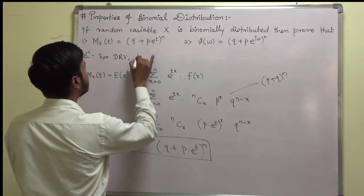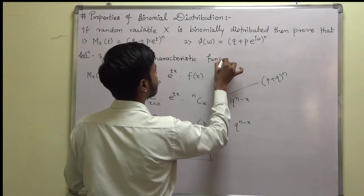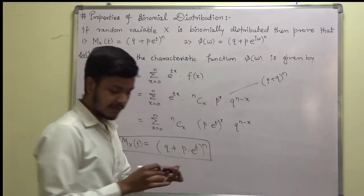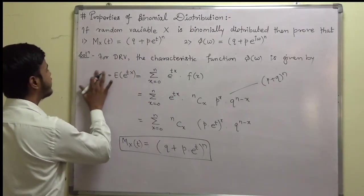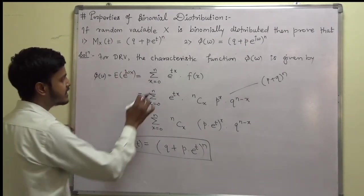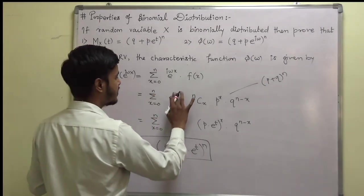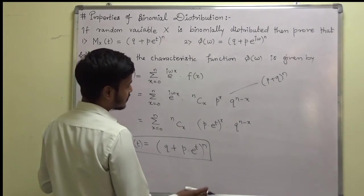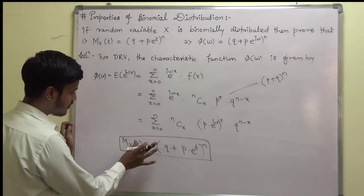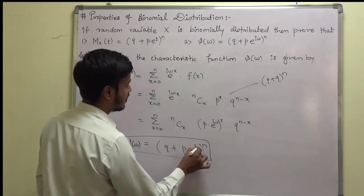For a discrete random variable, the characteristic function, denoted by φ(ω), is given by the expectation of e^(iωX), which is summation x = 0 to n of e^(iωx) into f(x). There is just a change like e^(iω), so this would be (p·e^(iω))^x, and my φ(ω) would be (q + p·e^(iω))^n.